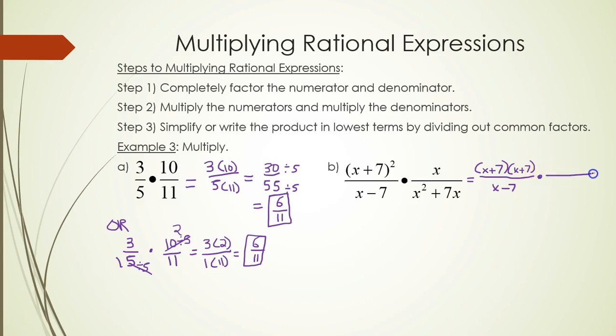Alright, in the second fraction, x is on top. And on the bottom, x squared plus 7x, we can factor out x, leaving us with x plus 7.